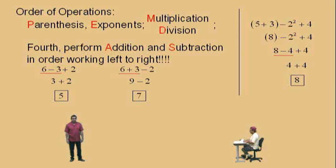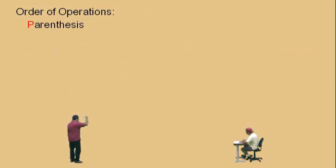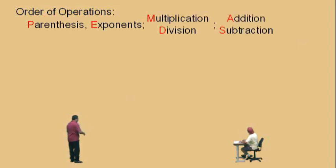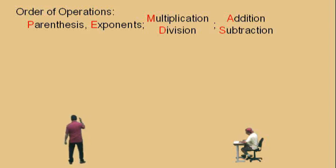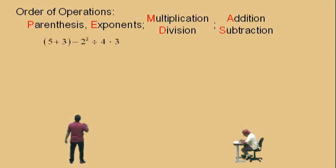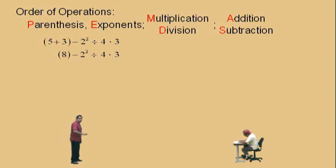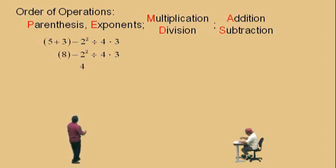So that's our order of operations. Let's do a couple problems. Remember: parentheses, exponents, multiplication and division done at the same time working left to right, addition and subtraction done at the same time working left to right. Here's our problem. We have parentheses, so we've got to do those first — that's 8. Bring down your work. No more parentheses. Do we have exponents? Yes — the 2 squared. So we'll do that first, which is 4. Bring down our 8.